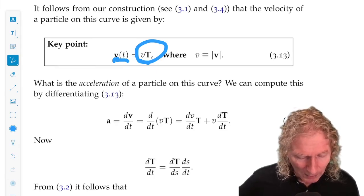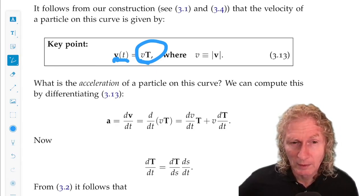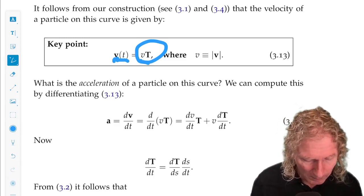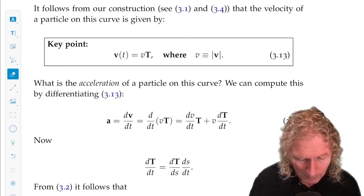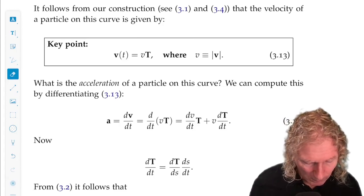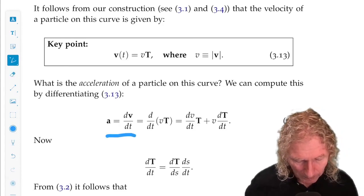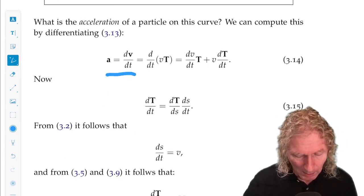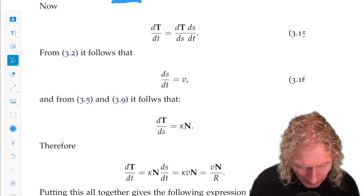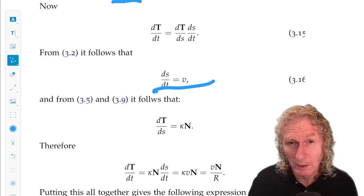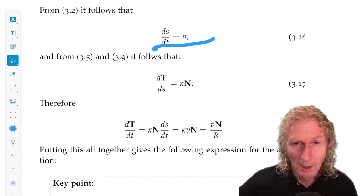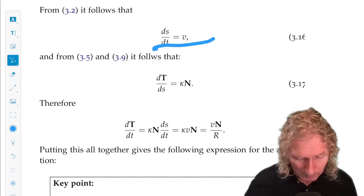T is v, velocity v(t) divided by magnitude. And then we get this relation here. Now we can differentiate this. And using the chain rule, and the fact that ds/dt is the velocity, you can check that from the definition of ds/dt given earlier.